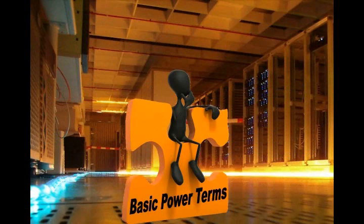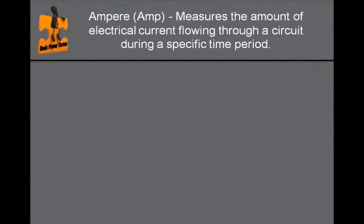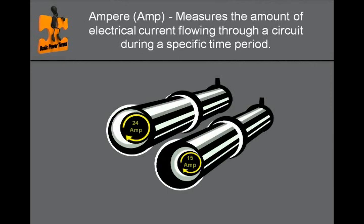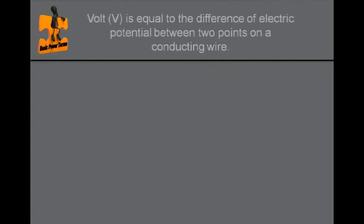The first step in selecting the right PDU for your data center is to understand some important basic power terms and how power works. Amperage measures the amount of electrical current flowing through the circuit during a specific time period. It is also referred to as amps. If we use an analogy that power works similar to the way water flows through a pipe, amps would be the size of the pipe.